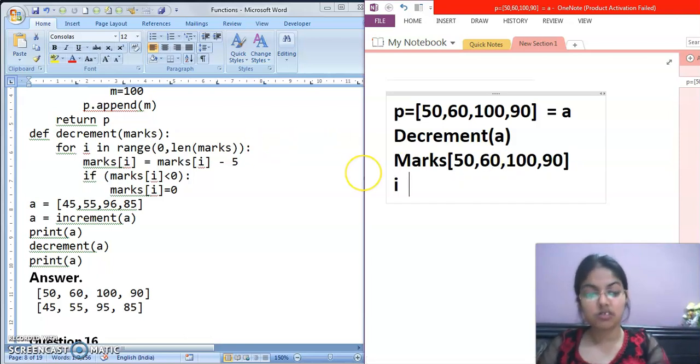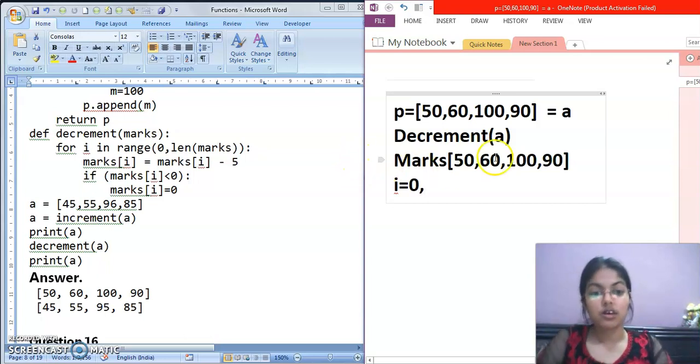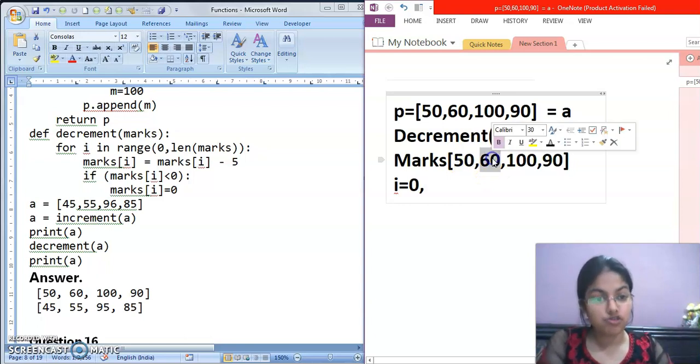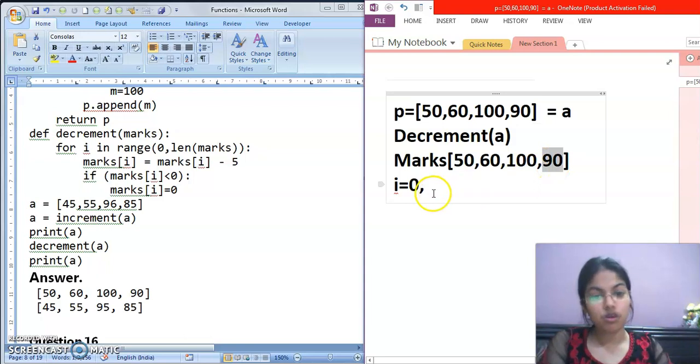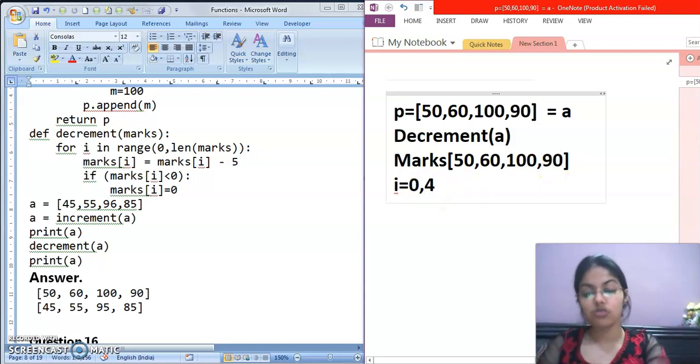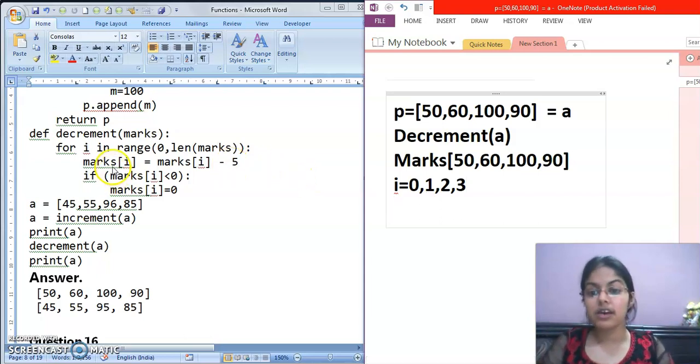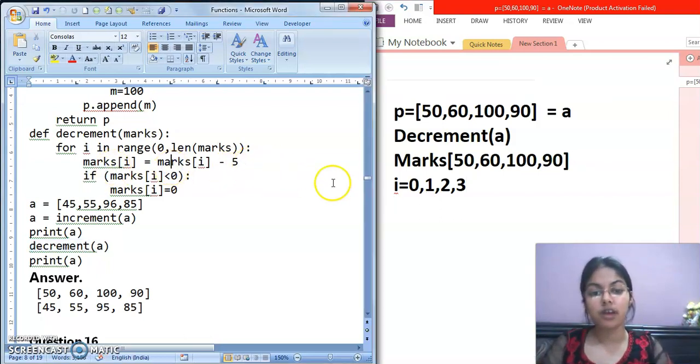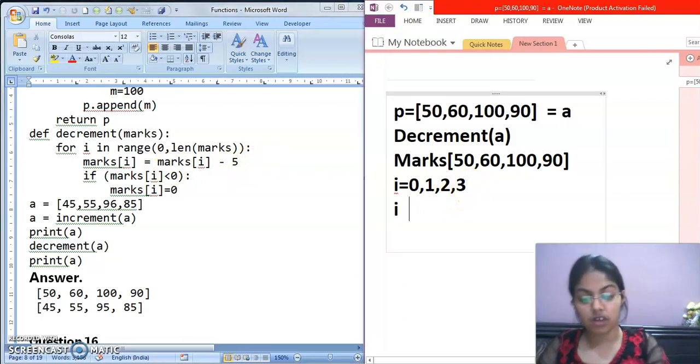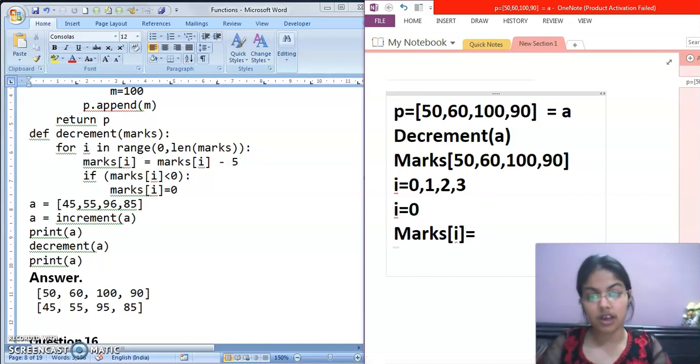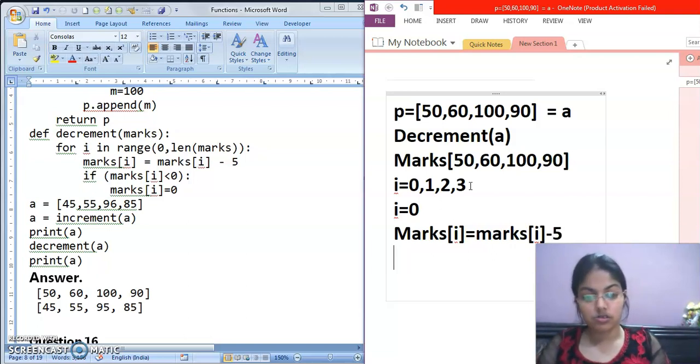So now decrement function will be called. Now marks, marks mein kya value list hogi? Same. Which is in P list. For I in range means I ki values kya kya hoongi? Zero se start hoongi. And till where? Length of marks. This marks list. Count its length. One, two, three and four. So if I take range zero, four. To till where? Zero, one, two and three. One less.